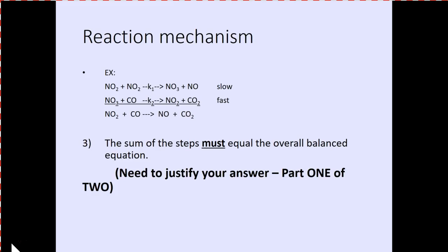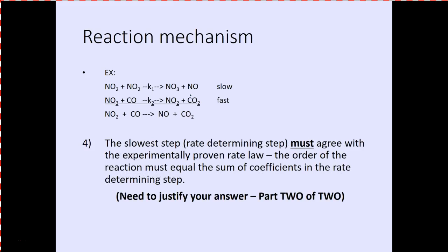The sum of the steps must equal the overall balanced equation. These two steps must add up, after canceling intermediates, to equal the final balanced equation. If the steps don't add up, this cannot be a potential mechanism. You need to justify your answer: the slowest step's stoichiometry matches the experimentally determined rate law, and the elementary steps add up to give the correct overall balanced equation.